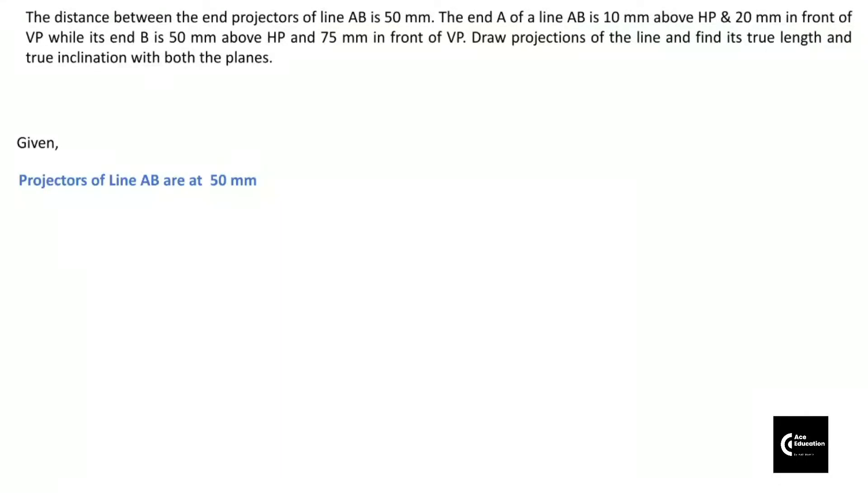So we have been given projectors of line AB are at 50mm. A dash is given 10mm above XY. A is given 20mm below XY. B dash is given 50mm above XY, and point B is given 75mm below XY.